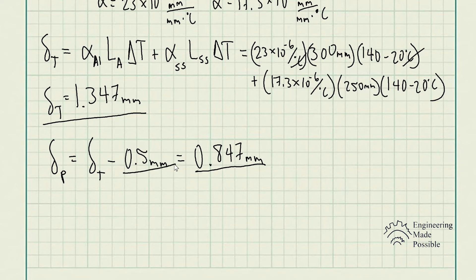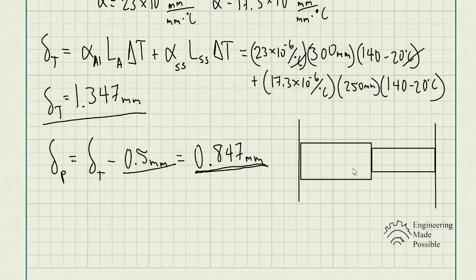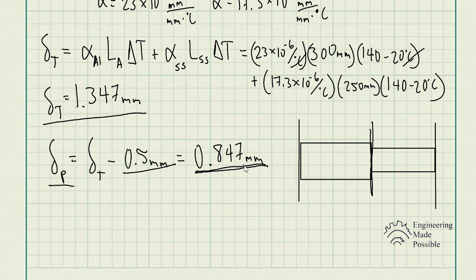Once it exceeds 0.5 millimeters, physically they cannot expand further. Any additional expansion that would otherwise occur without that constraint will develop a force. Just like with statically indeterminate problems, we release the constraint and see how much total deformation there would be, then solve for a force that pushes it back to the constraint. That deformation — 0.847 millimeters — is the total deformation to bring them back to where they would otherwise be making contact.